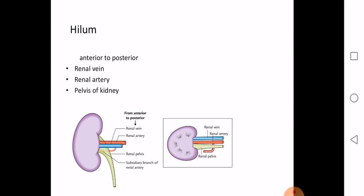From anterior to posterior, the structures arranged in the hilum of the kidney are: renal vein, renal artery, and renal pelvis — V-A-P. The posteriormost structure is the renal pelvis.